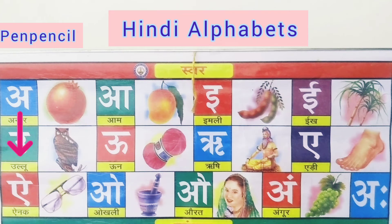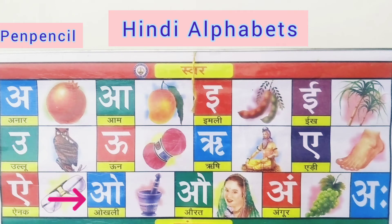I say aynak — spectacles. I say aynak — spectacles. O say ockali — motor. O say ockali — motor.